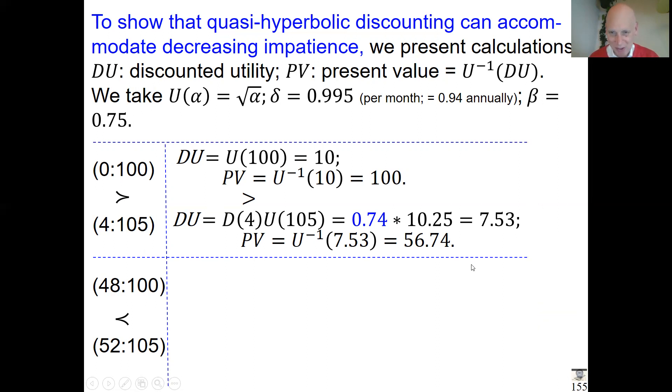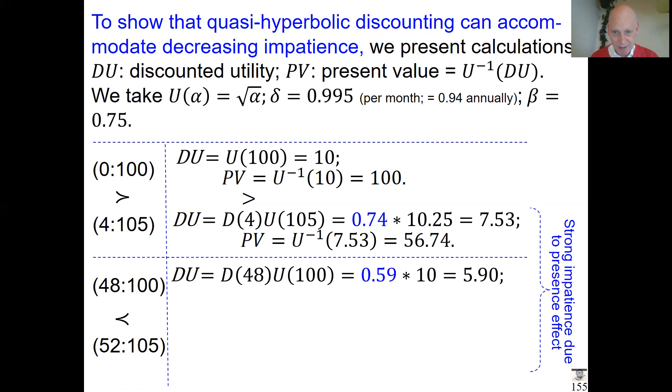For the other two, there's also the present effect impacting them, and it is strong, but not much else is happening. For 48:100, for 48 months, the discounted weight is quite low due to the presence effect, but after that it didn't decrease very much, so the present value is 34.